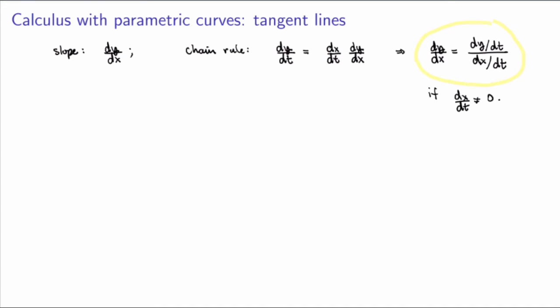What happens if dx/dt equals zero? The expression dy/dx blows up — assuming dy/dt is finite — meaning the slope becomes infinite, so the tangent line is vertical. Therefore, points where dx/dt equals zero and dy/dt is finite and nonzero are points where the tangent lines are vertical.